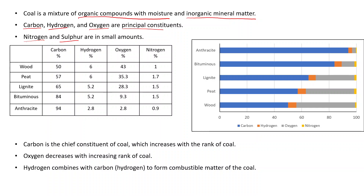When we look at the change from vegetal material to the highest rank of coal, this is how the variation in carbon, hydrogen, oxygen and nitrogen occurs. So wood consists of — all these are average values — and from wood to anthracite, you can see how carbon values are increasing, hydrogen value decreases, oxygen value decreases, while nitrogen is of course very small in quantity.